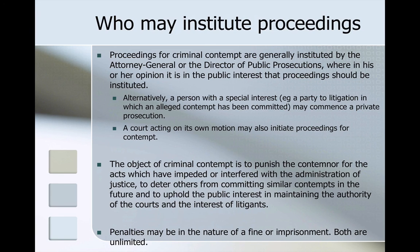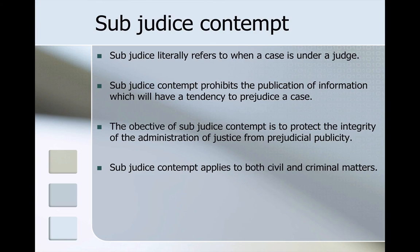Moving on to sub judice contempt. Sub judice literally refers to when a case is under a judge. Sub judice contempt prohibits the publication of information which will have a tendency to prejudice a case before the court. The objective is to protect the integrity of the administration of justice from prejudicial publicity such that it would interfere with the administration of justice. Sub judice contempt applies to both civil and criminal matters.